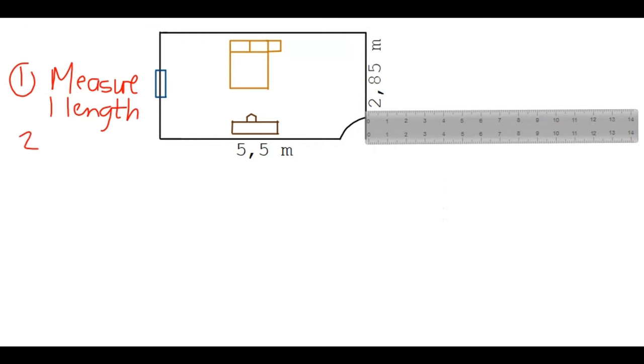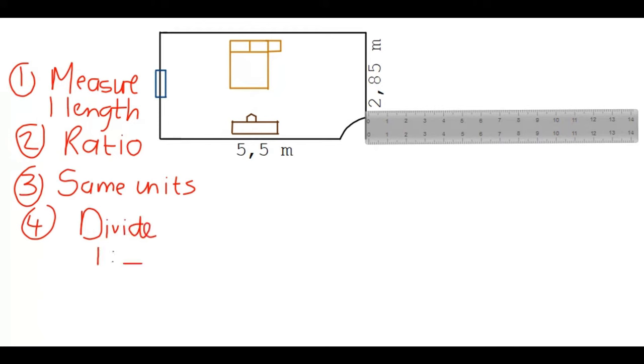Second thing we're going to do is write down a ratio. Third thing is get those ratios in the same units. And lastly we will divide. And once you divide, you'll be able to get that 1 to something scale.